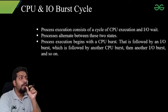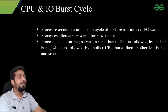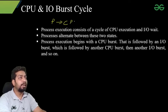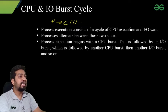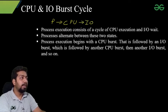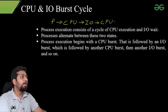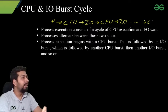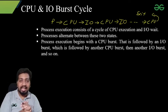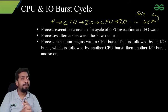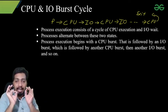A process alternates between these two states: CPU burst and IO burst. Process execution begins with the CPU burst — a process always starts from CPU burst, not IO burst. That CPU burst will be followed by IO burst, then another CPU burst, then IO burst, and so on. The last cycle will always be CPU only; after CPU burst there can be an exit.